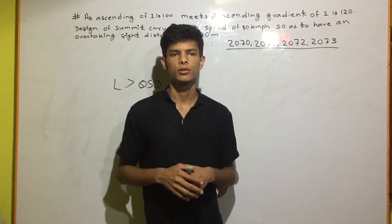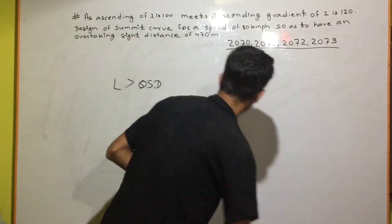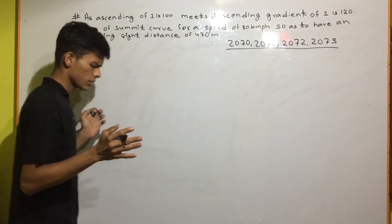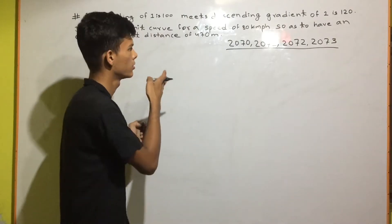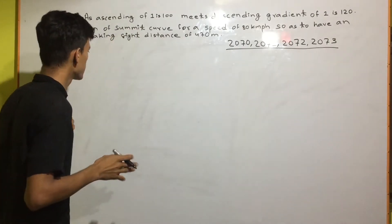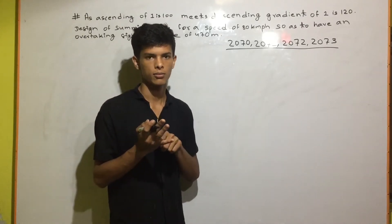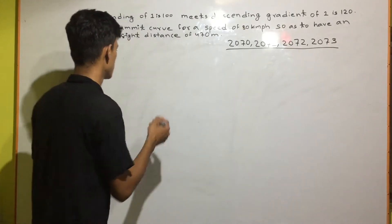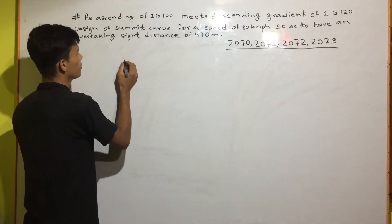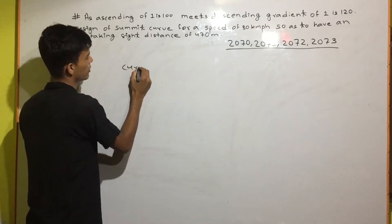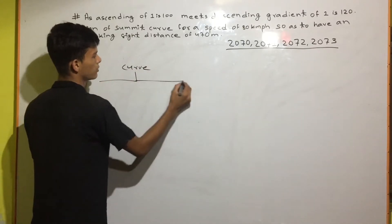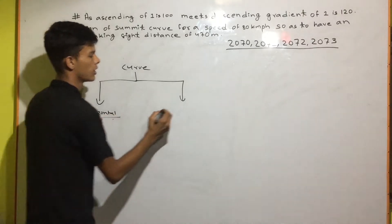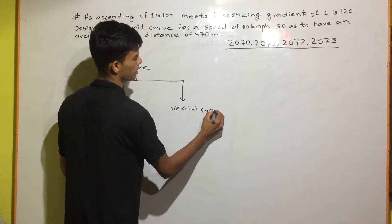I've been talking about the vertical curve. There are two types of curves: horizontal and vertical.